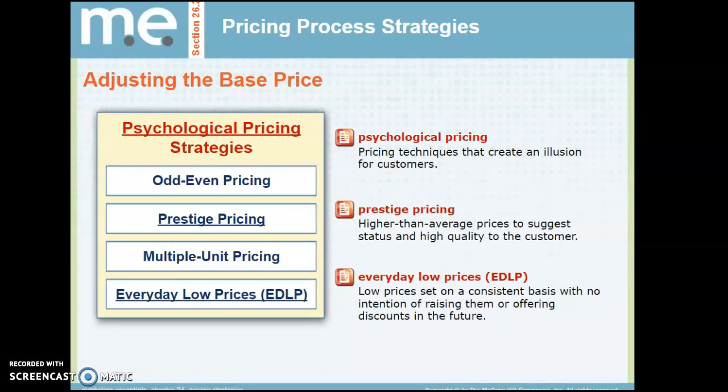Psychological pricing strategies are pricing techniques that create an illusion for the customer. For example, a 10 for $10 deal — in reality you could buy one for $1, but people tend to pick up 10 items when it's advertised that way. Prestige pricing uses higher-than-average prices to suggest status and high quality — like pricing an expensive car higher than average to portray wealth and status. Everyday low prices means low prices set on a consistent basis with no intention of raising them, like Walmart's approach.